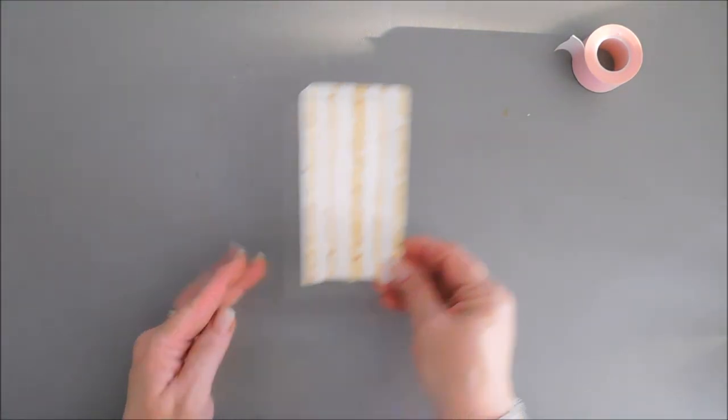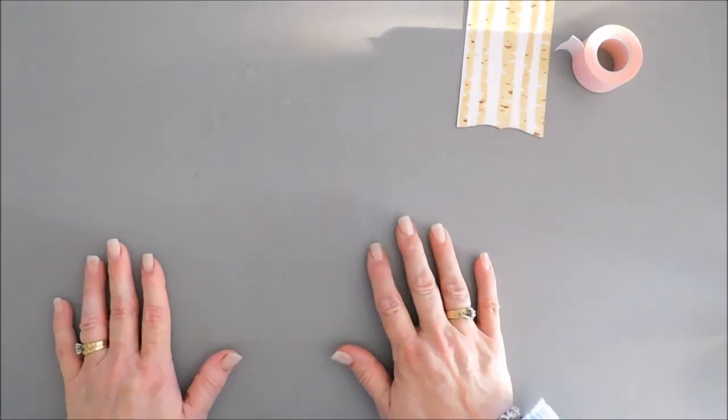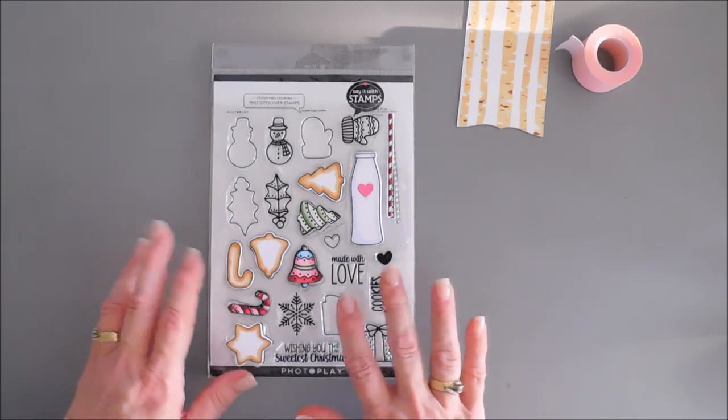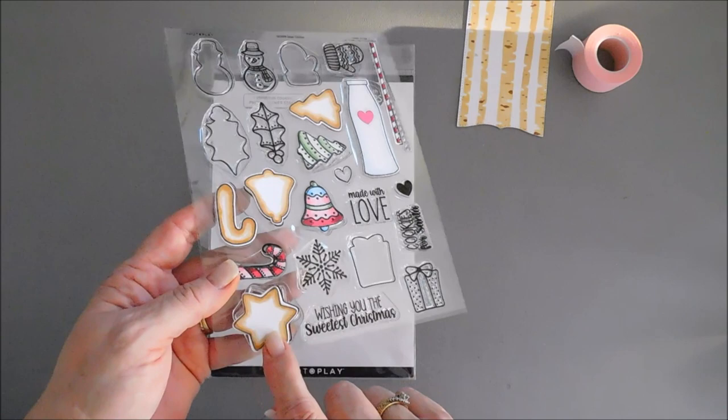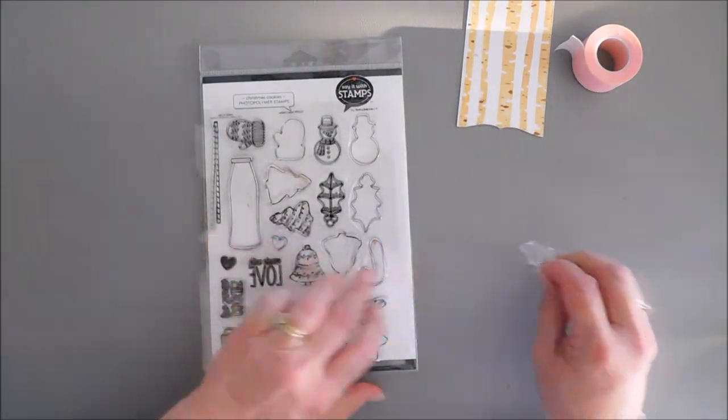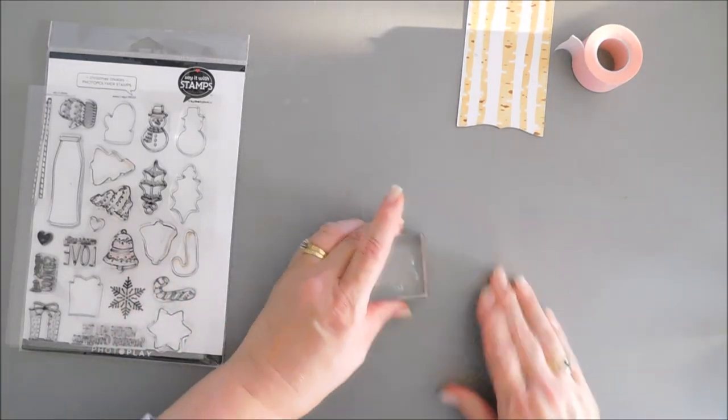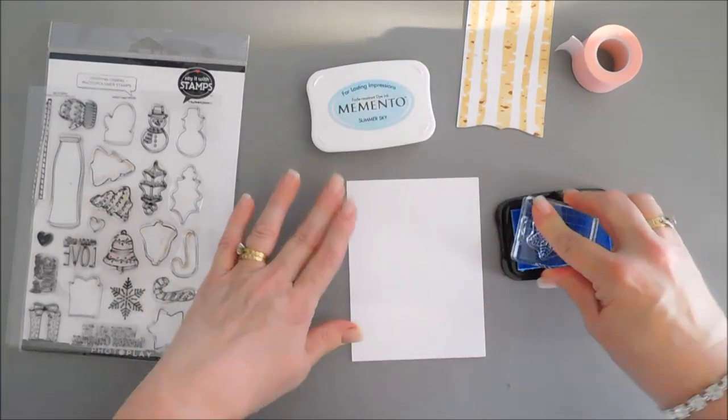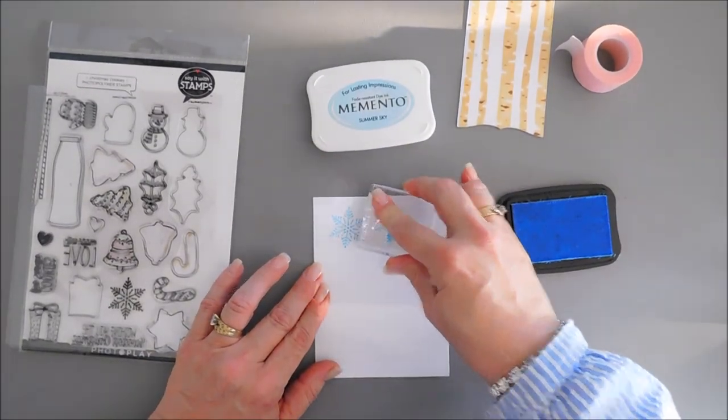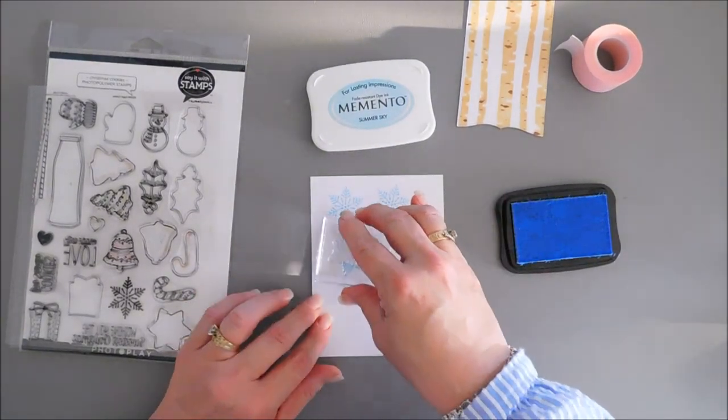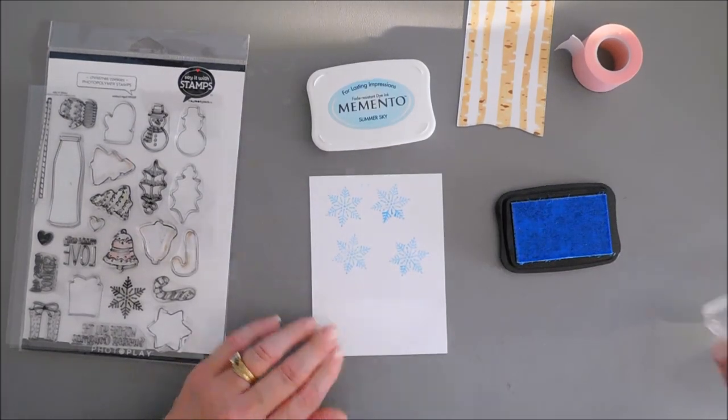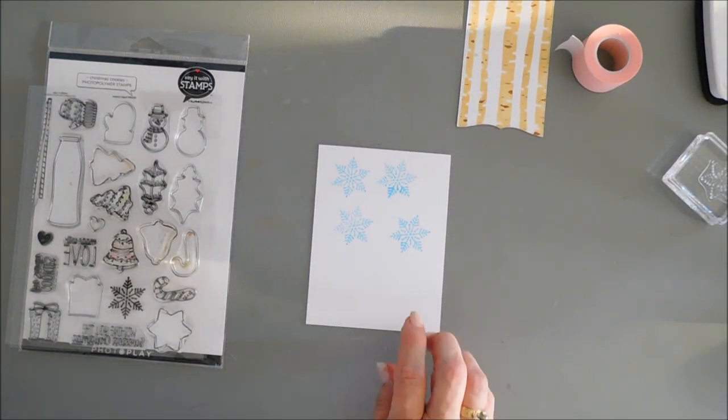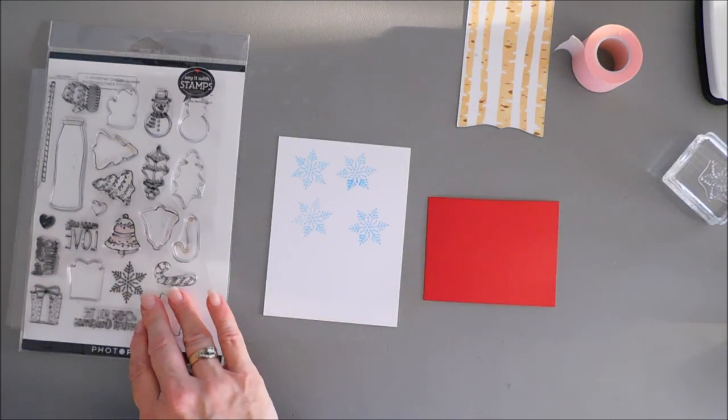We're gonna do a little bit of stamping. I want to bring in some snowflakes to create my winter card. I'm gonna bring in an older stamp set from the Say It With Stamps collection called Christmas Cookies. We're not going to use the cookies—I want to use the snowflake. I'm just gonna make a snowflake with it. We're gonna stamp with a blue ink on some white cardstock, and I'm gonna stamp it three times. Now I'm gonna take the coordinating die and cut out my snowflake.